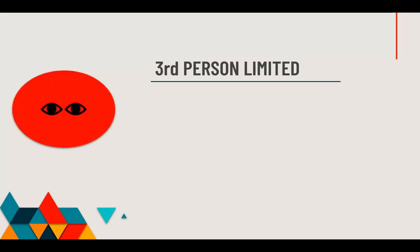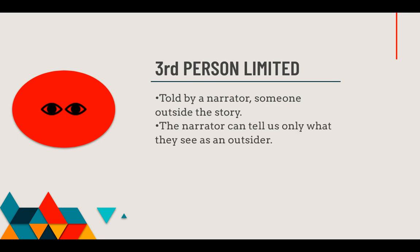Then you have third person, and we have two different types of third person narrators. The first is third person limited. When something is limited, it means it has a boundary — it stops somewhere. You'll notice my icon only has the eyes this time. This means it's told by a narrator, someone outside the story — not one of the characters, but an observer. Somebody from the outside who is just watching everything happen. For third person limited, the narrator can only tell us what they see as an outsider, what they observe.